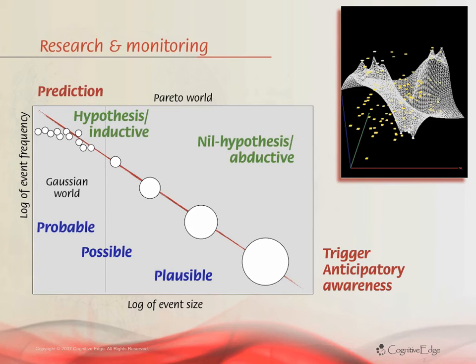In this world of nil hypothesis and abductive reasoning, what becomes important is we can see the vectors or possibilities of change. We move from attempts at predictive models — classic systems approaches of boxes with arrows and probabilities on them — into whole-scale system simulation.